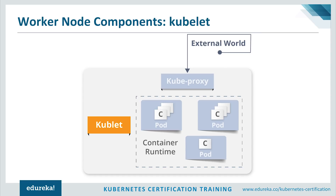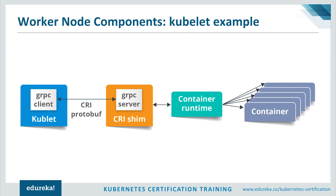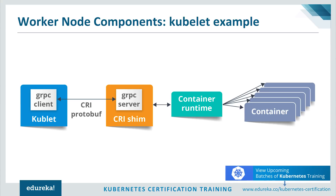Kubelet is an agent which runs on each worker node and communicates with the master node. It receives the pod definition and runs the containers associated with that pod, making sure that containers which are part of pods are healthy at all times. The kubelet connects to the container runtime using the Container Runtime Interface (CRI), which consists of protocol buffers, gRPC APIs, and libraries. The kubelet connects to the CRI shim to perform container and image operations. CRI implements two services: the runtime service, responsible for pod and container operations, and the image service, responsible for all image-related operations.